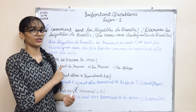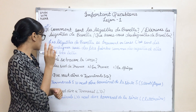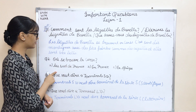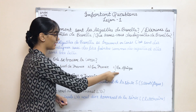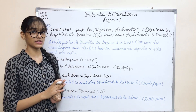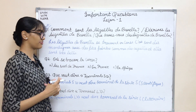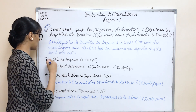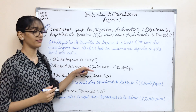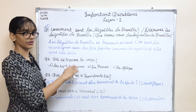The next important question is an MCQ type: 'Où se trouve la Corse — au sud de France, en France, en Afrique?' The same options appear in many question papers. The answer is 'au sud de France.' Don't get confused and write 'en France' — it's specifically 'au sud de France.'